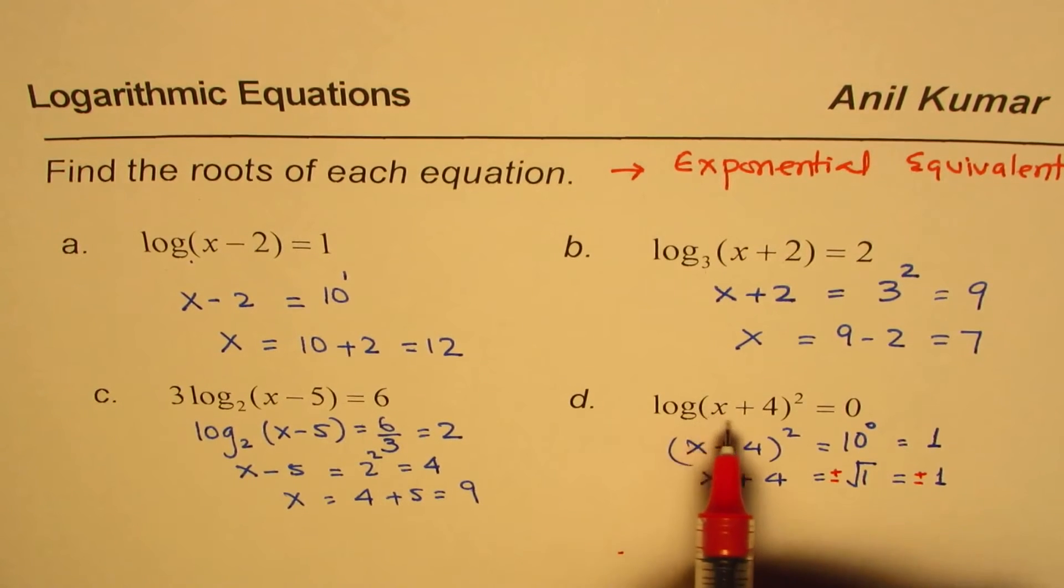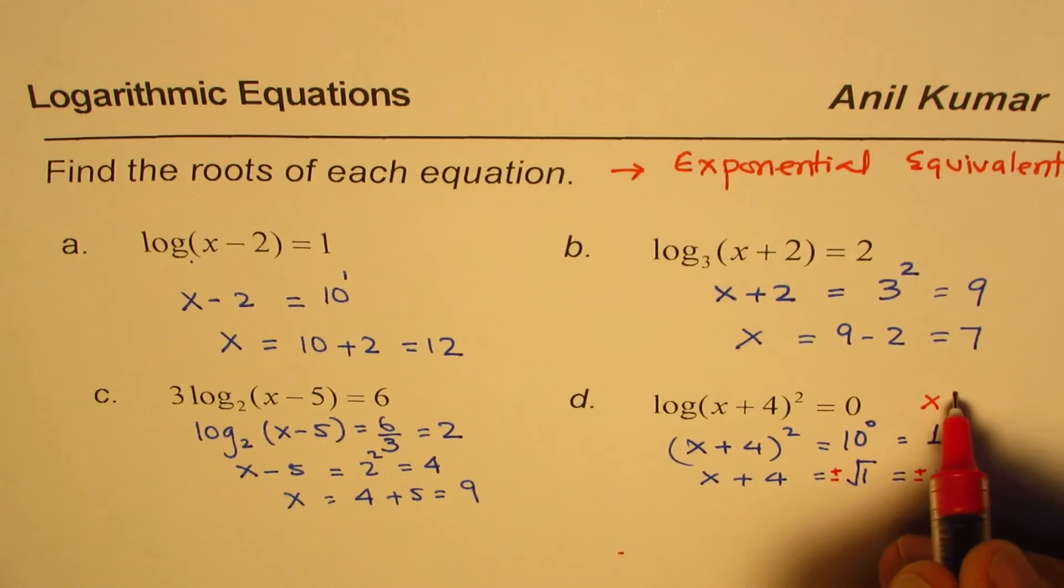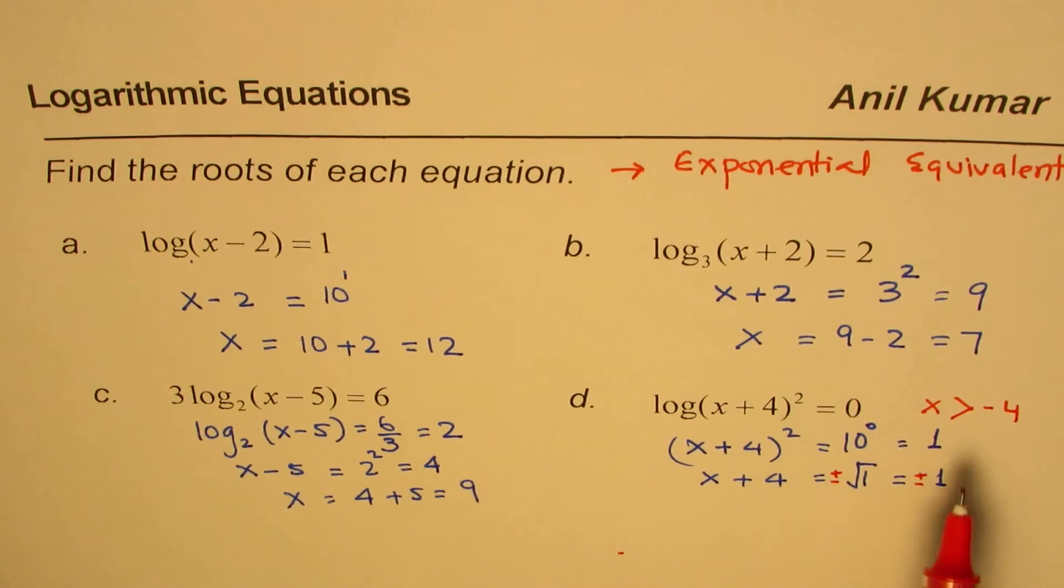Now, as you know, the domain is, in this case, x plus 4 should be greater than 0. So we know x should be greater than minus 4. That is the domain for us. So remember, if we get a solution that x is less than minus 4, it will be wrong.